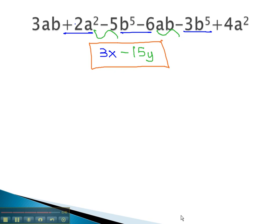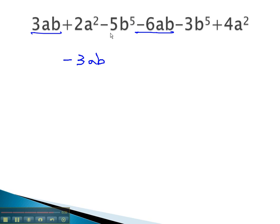We can follow the same process with this example. We've got 3ab, which is like the negative 6ab, which leaves us with negative 3ab. There is also 2a squared, which is like the 4a squared. Add the numbers together, and we get positive 6 of these a squareds. Negative 5b squared is like negative 3b squared, giving us negative 8b squared. And we have our final answer.